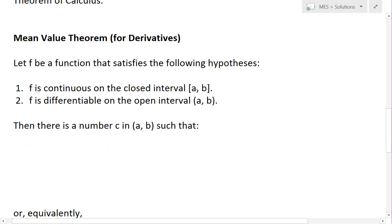So it's continuous on [a, b] as well. And f is differentiable on the open interval (a, b). The open interval means it doesn't have to be continuous at a or b, but in between it has to be. This just means you can take the derivative pretty much anywhere between a and b.